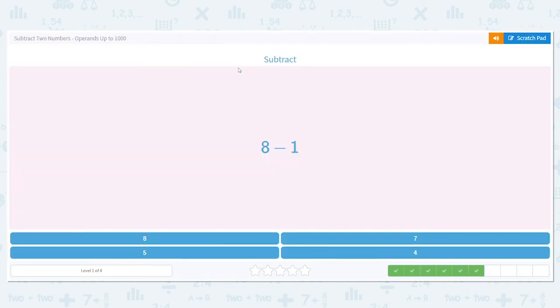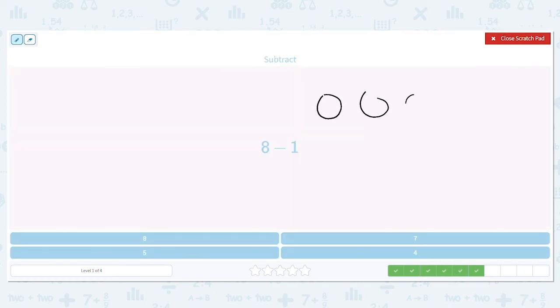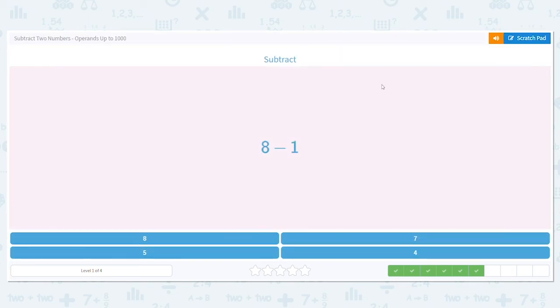Next problem. 8 minus 1. 8 minus 1 is either going to be 8, 7, 5, or 4. So if you're not sure, this is a good one where you can draw a picture. 1, 2, 3, 4, 5, 6, 7, 8. And I take away 1. How many are left? 1, 2, 3, 4, 5, 6, 7. There's 7. Again, you might be able to just look at the problem and answer it, but remember, if you're stuck, use a strategy to help.